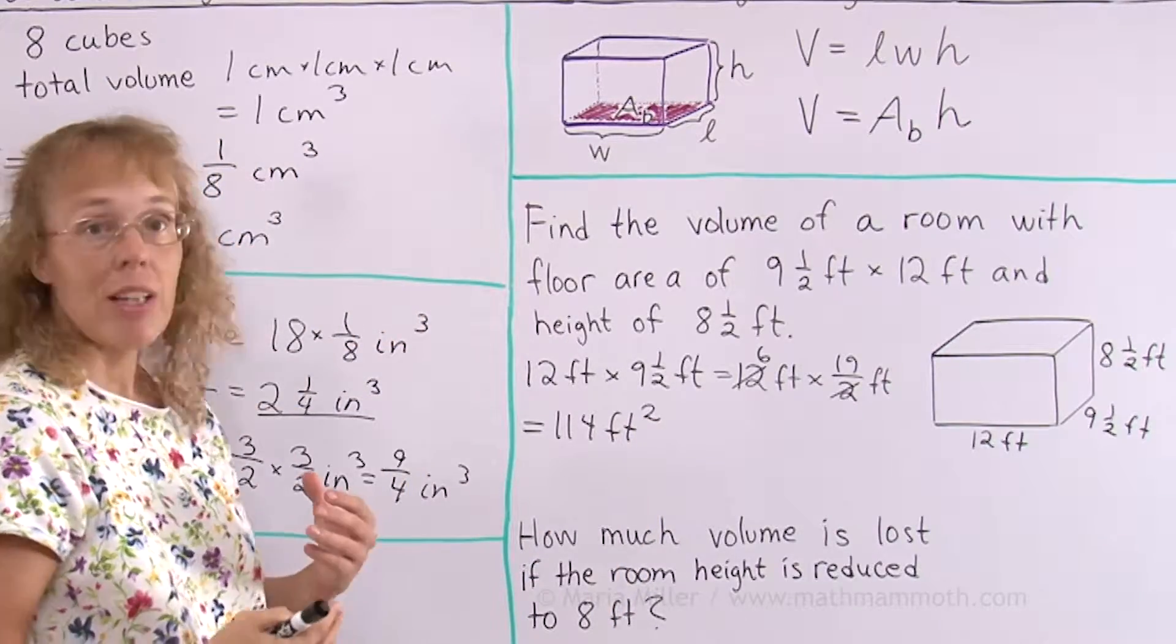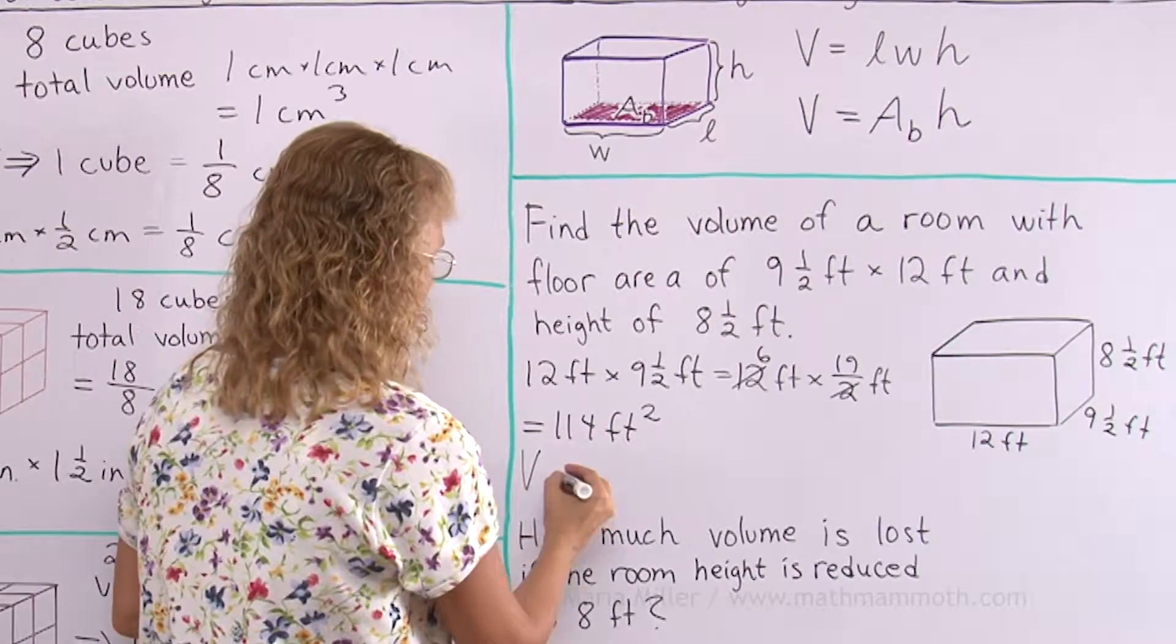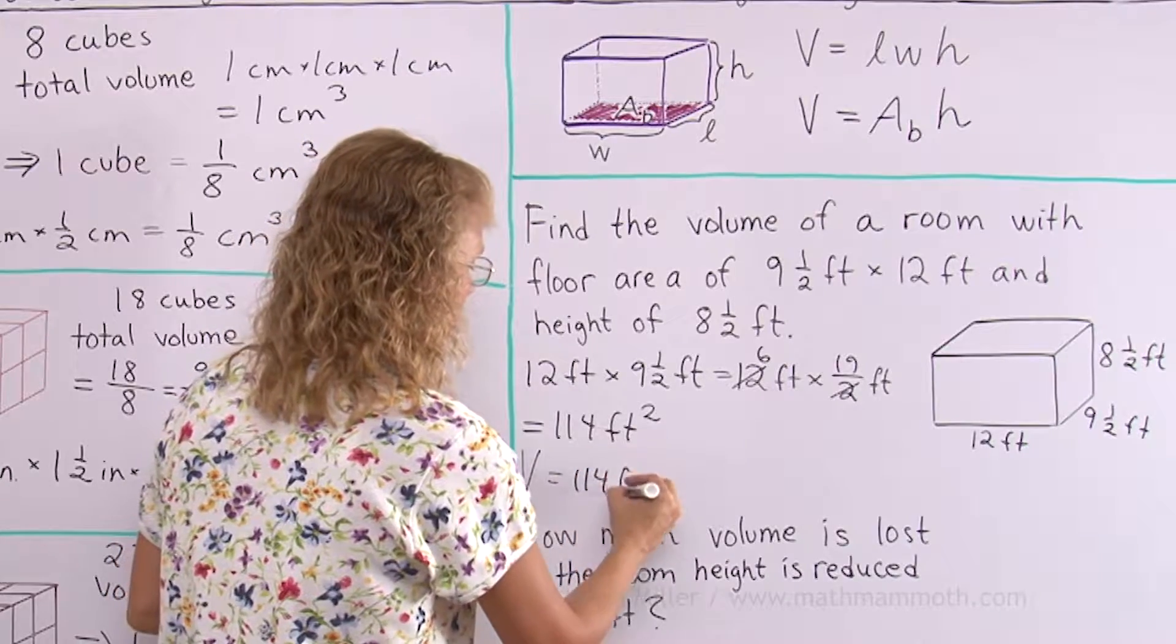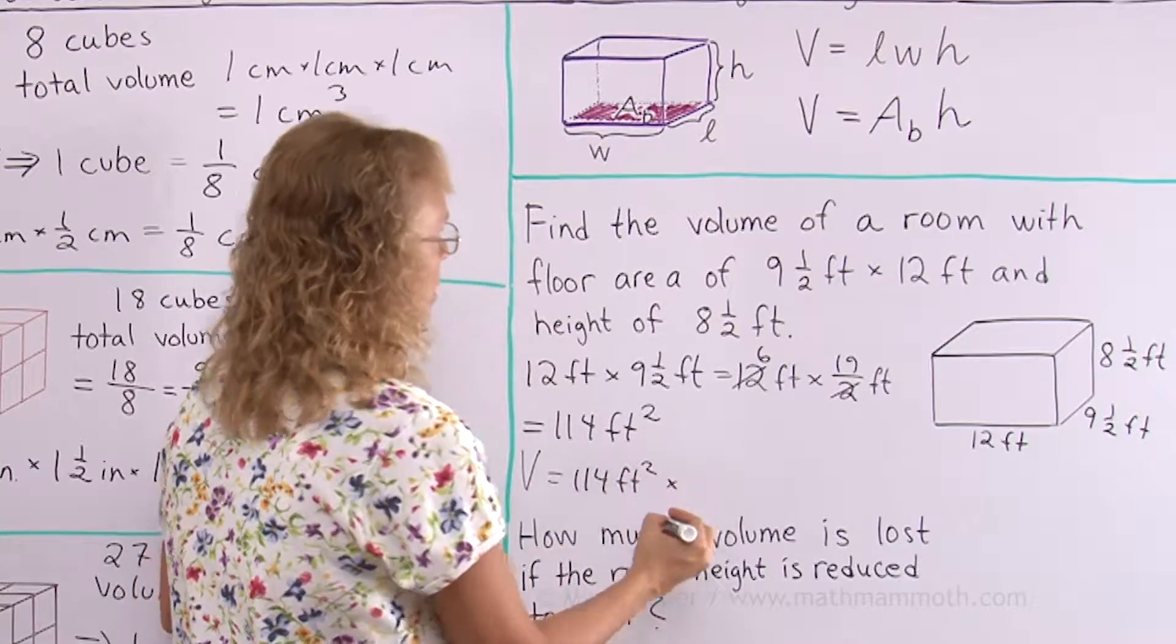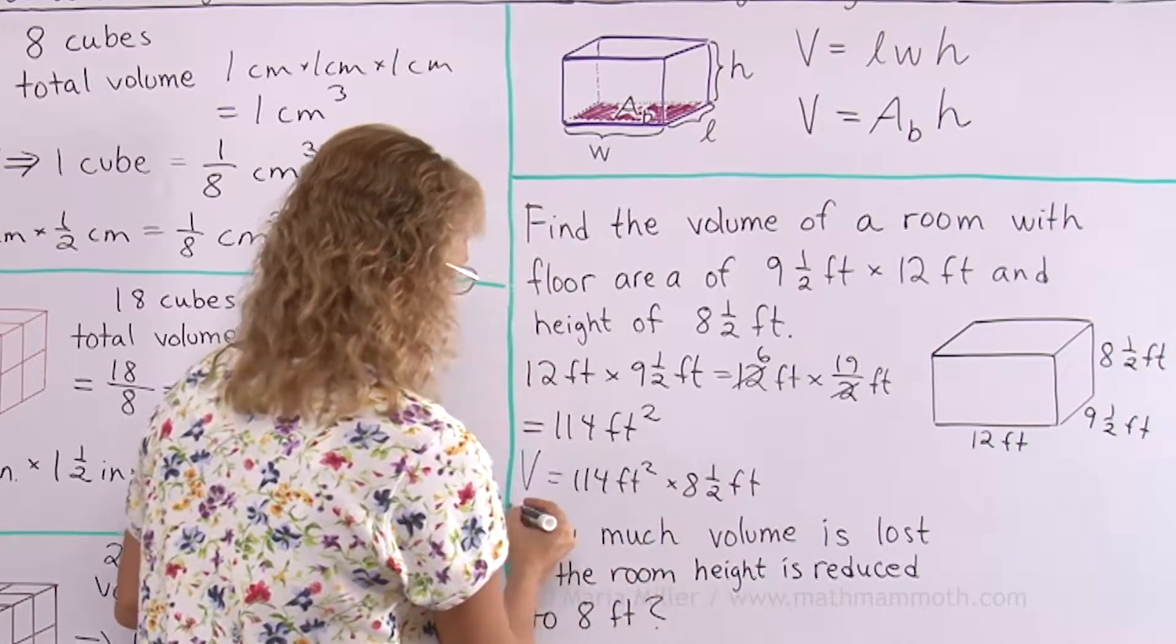And now to find the volume, I will take this and multiply that times the height. V for volume would be 114 square feet times the height, 8½.